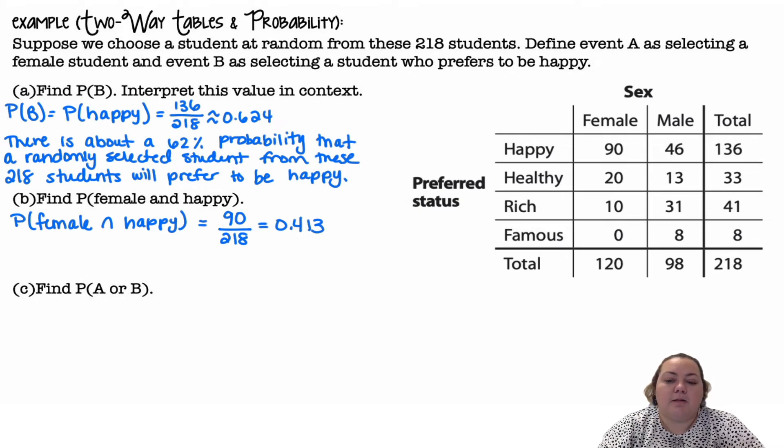Find the probability of A or B. Well, A is female and B is prefer to be happy. So probability of female or happy, and that's the union symbol. So female or happy, I'm taking all of the females plus the other happy. So all the females is 90, 20, 10, 0,